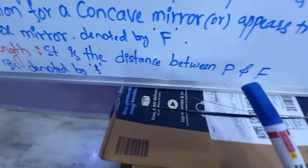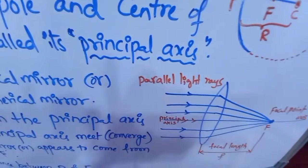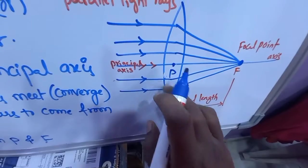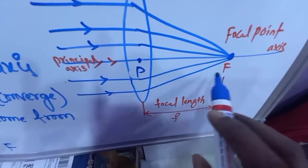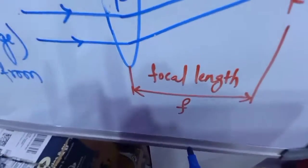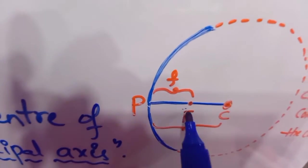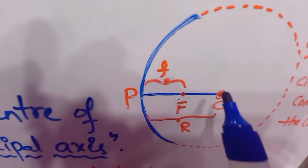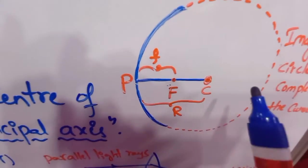Focal length is the distance between the pole P and the focal point F, and it is denoted by small f. The focal point lies between the pole and the center of curvature. The distance from pole to focal point is the focal length (small f), and the distance from pole to the center of curvature is the radius of curvature. The horizontal line through all these points is the principal axis.